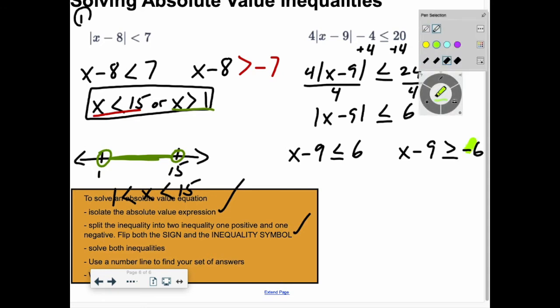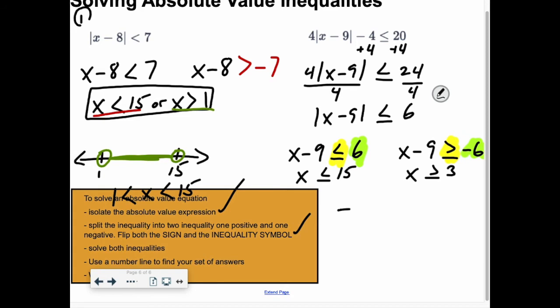I'm going to split it into two parts. x minus 9 is less than or equal to 6. x minus 9 is greater than or equal to negative 6. Remember, with this, you have to change the sign of the number and the inequality symbol. They both flipped. Well, now I'm just going to solve them both out. So I'm going to have adding 9 to both sides, x has to be less than or equal to 15. In the second part, adding 9 to both sides, x has to be greater than or equal to 3.